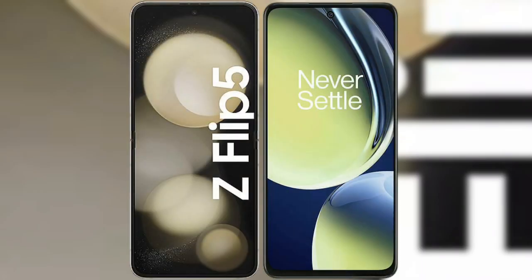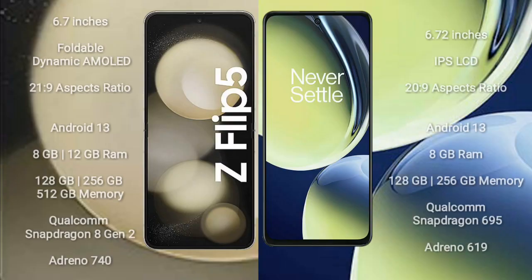I will compare the new Samsung Galaxy Z Flip 5 with OnePlus Nord CE 3 Lite. Samsung Galaxy Z Flip 5 comes with a 6.7-inch foldable dynamic AMOLED display and aspect ratio 21.9. OnePlus Nord CE 3 Lite comes with a 6.72-inch IPS LCD and aspect ratio 20.9.